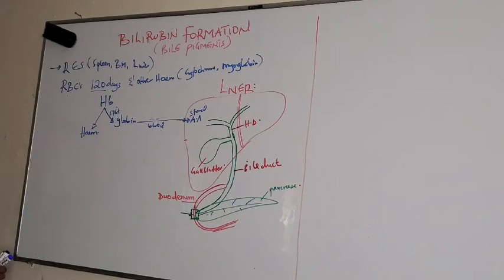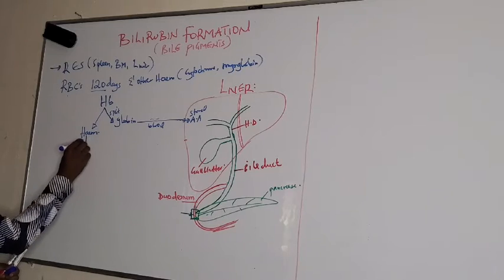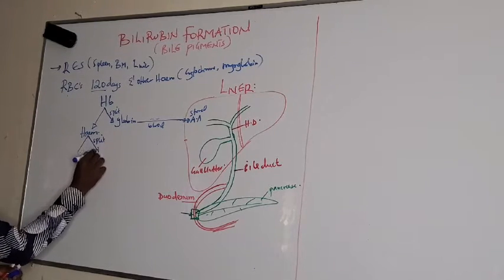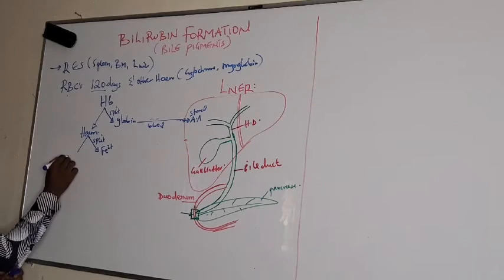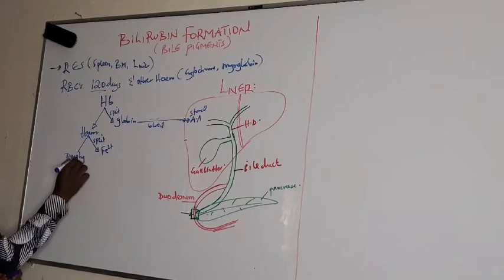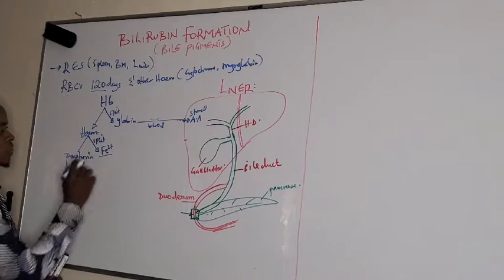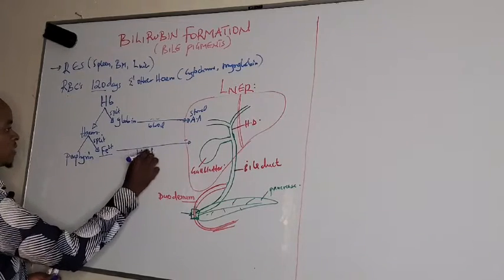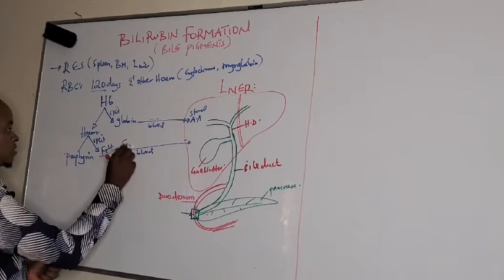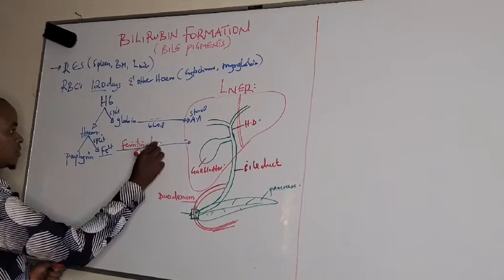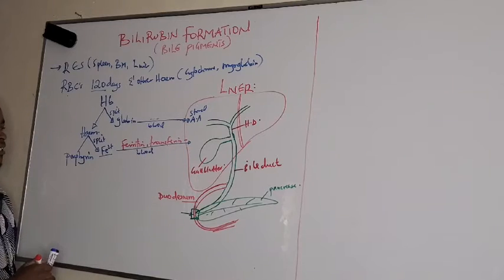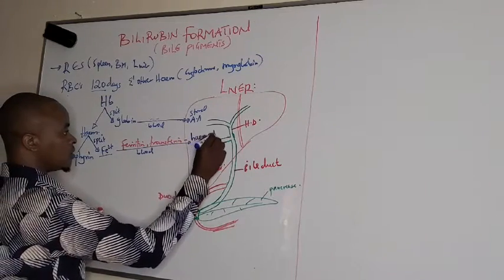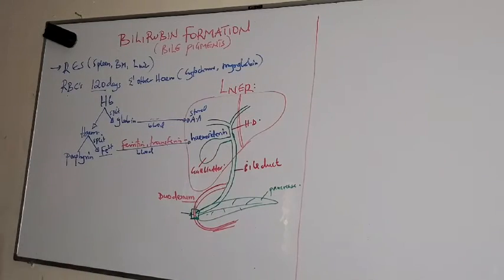The heme which is formed in the reticuloendothelial system is oxidized. It is split to iron and the porphyrin ring. The iron, which is always found at the center of the porphyrin ring, is transported in the blood to the liver as ferritin and transferrin. After being transported, it is stored in the liver in the form of hemosiderin.